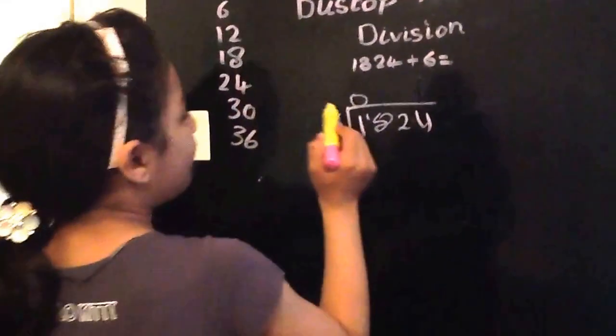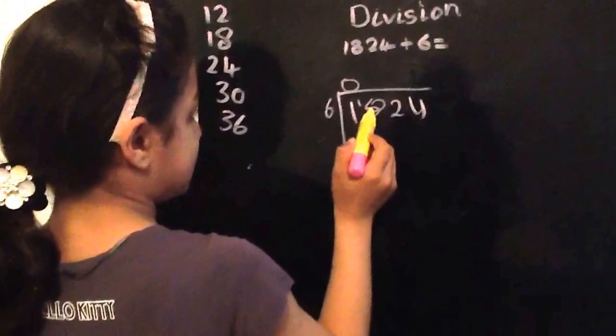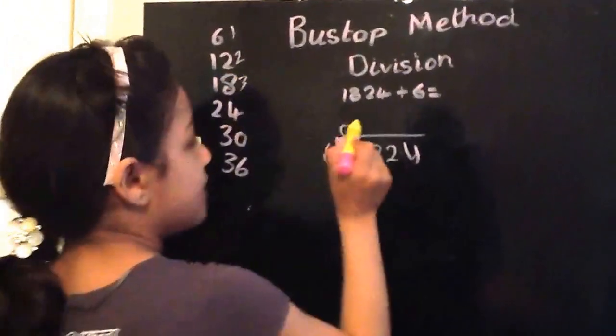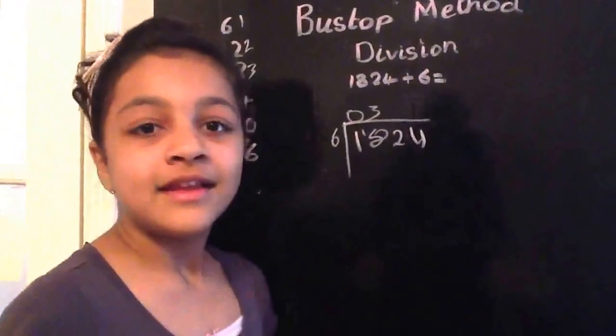And now, how many sixes are in eighteen? Let's see. One, two, three. Three. Now, my friend Amina will continue for you.